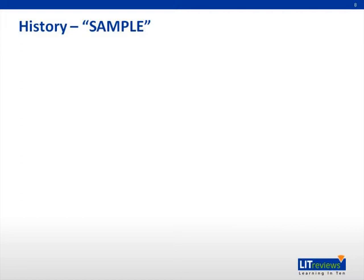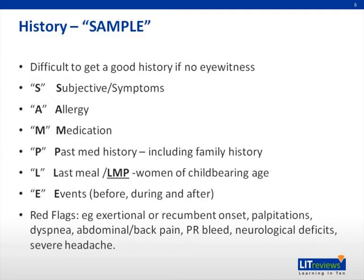History taking is of paramount importance in arriving at the underlying cause of a syncope episode. It can sometimes be difficult to get a good history if there was no eyewitness. It may help to use the SAMPLE template for history taking. S stands for subjective complaints and symptoms. Ask the patient what they can remember of the episode, which may help to determine if it was true syncope. Was there complete loss of consciousness? Syncope should not be confused with seizures, stroke, or head trauma. Were there any associated symptoms which may give clues to the etiology of the syncope?